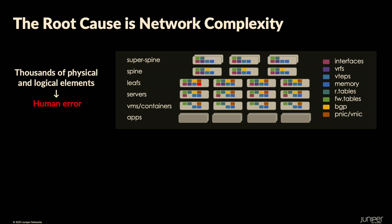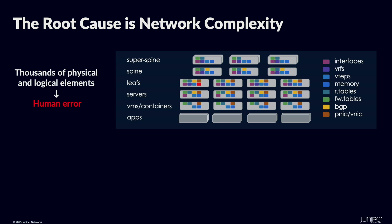This is where Juniper comes in, because the network is complex. There are so many elements that make up a network — spines, leaves, and all the links. We're amplifying that with AI when we're talking about 800 gig networks, and in the future 1.6 and beyond, that are going to reach some crazy speeds. If anything goes wrong, it's going to go wrong fast.